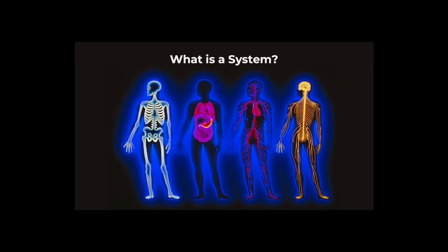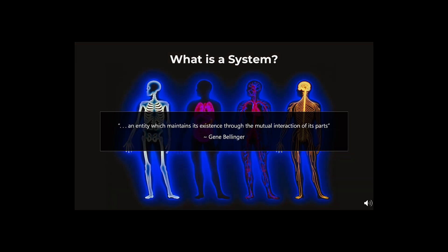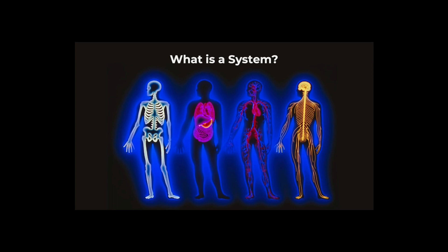According to one expert, a system is an entity which maintains its existence through the mutual interaction of its parts. Not only does this interaction between the parts occur within a particular system, but as with the human body, each system also interacts with other systems. This forms a kind of meta-system.